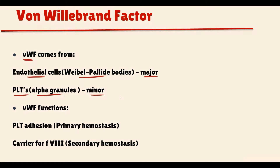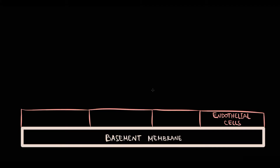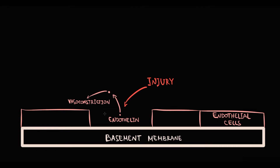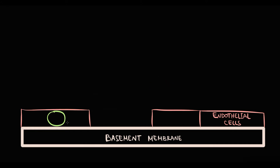To explain von Willebrand disease, we have to briefly recall the entire hemostasis. If damage to an endothelial cell occurs, endothelin that was contained inside the endothelial cell will be released into the bloodstream and will cause transient vasoconstriction. After vasoconstriction, the organism has to immediately cover and repair the damaged area. In order to do this, endothelial cells release from Weibel-Palade bodies a huge amount of von Willebrand factor.